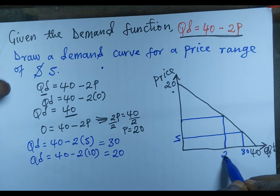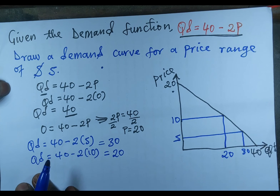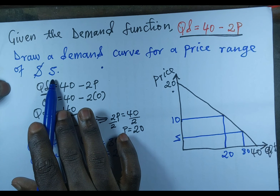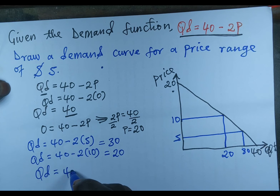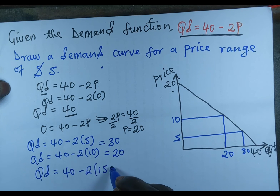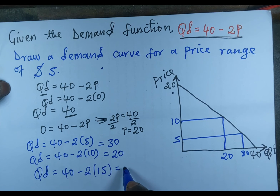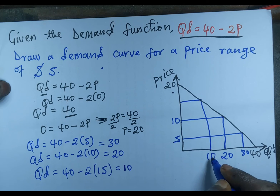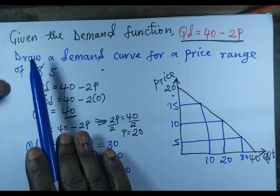We now look for the point where price is 15, since the price increases by 5 US dollars each step. For P = 15: Qd = 40 minus 2 times 15 = 40 minus 30 = 10. So for a price level of 15 US dollars, we have 10 units demanded. We plot 10 on the quantity axis at a price of 15.